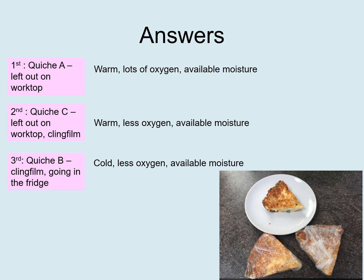The third one to go off will be quiche B, which is wrapped in cling film and going in the fridge — it's probably okay for about three days. It's cold in the fridge, there's less oxygen because it's wrapped up, and there is available moisture. So all three have available moisture.